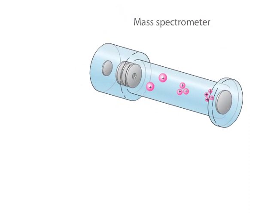Mass spectrometers employ a wide variety of techniques. However, every mass spectrometer consists of three essential components: the ion source, the mass analyzer, and the detector.